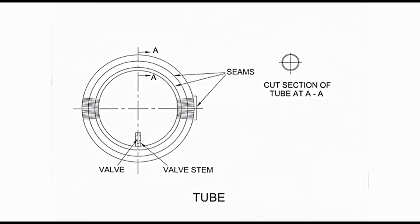Seams are formed when sheets are joined. There is a valve stem provided on the lower inner side of tube. It is known as valve stem as it contains a one-way valve. The valve is also shown inside the stem. This valve allows air in one direction only, i.e., into the tube. Valve stem is sealed on tube at the time of vulcanization.